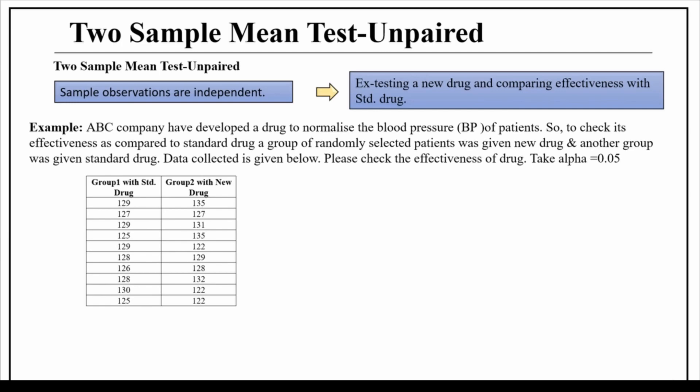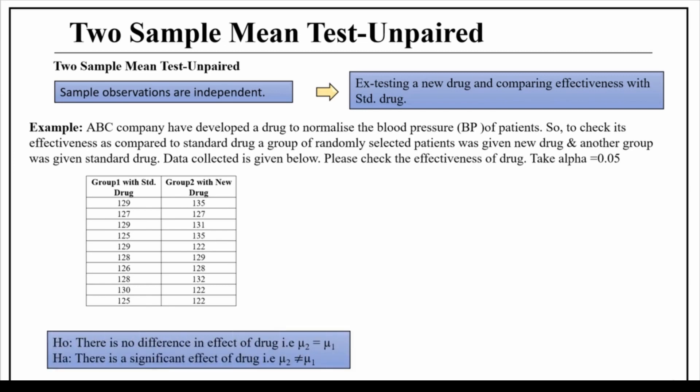We will solve this question in Excel, but first let's formulate the hypothesis. The null hypothesis is that there is no difference in the effect of drugs, that is mu1 equals mu2. The alternate hypothesis is that there is a significant difference, that is mu1 is not equal to mu2. Since the alternate hypothesis has a not-equal-to sign, it is a two-tailed test with the rejection region on both sides. Now let's go to the actual sheet.